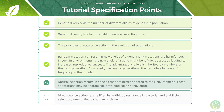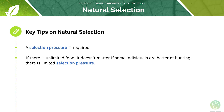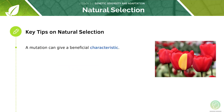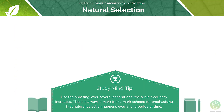Next we will cover how natural selection makes a species better adapted to its environment. Here are some key tips on natural selection. First, a selection pressure is required — natural selection relies on there being a selection pressure. If there is unlimited food, it doesn't matter if some individuals are better at hunting, so there is only a limited selection pressure. A beneficial characteristic can often arise due to a mutation, which then spreads due to natural selection. Natural selection and evolution happen over several generations — the allele frequency increases over several generations. There is always a mark in the mark scheme for emphasising that natural selection happens over a long period of time.